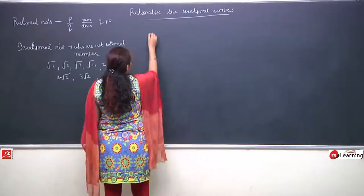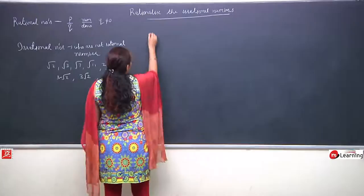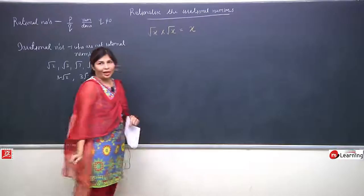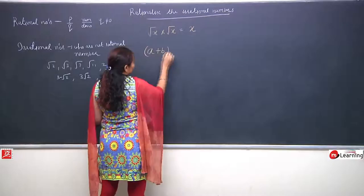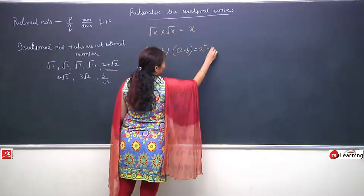Before taking some small questions, I am repeating the identity which will be used in rationalization: root x multiplied by root x is always equal to x. And one more very important identity: (a + b)(a - b) = a² - b². We will first do questions based on these.